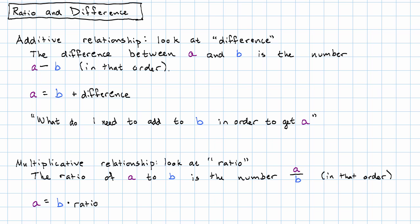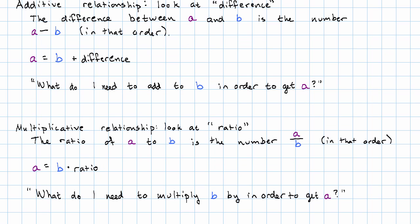So the ratio answers the question: what do I need to multiply b by in order to get a? The difference answers the question, what do I need to add? The ratio answers the question, what do I need to multiply by? Let's see how we use this language.